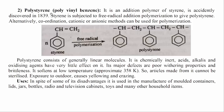2. Polystyrene (polyvinyl benzene). It is an addition polymer of styrene, accidentally discovered in 1839. Styrene is subjected to free radical addition polymerization to give polystyrene. Alternatively, coordination, cationic, or anionic methods can be used for polymerization. Polystyrene consists of generally linear molecules. It is chemically inert; acids, alkalis, and oxidizing agents have very little effect on it.